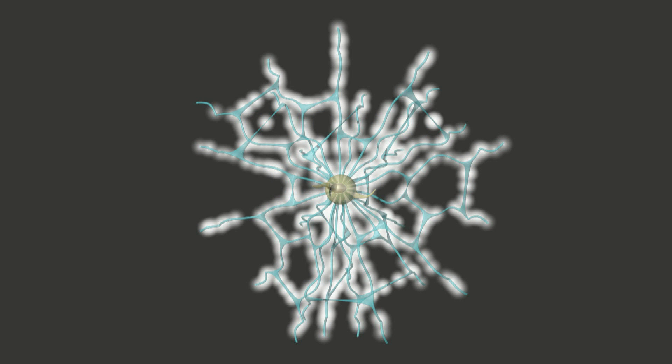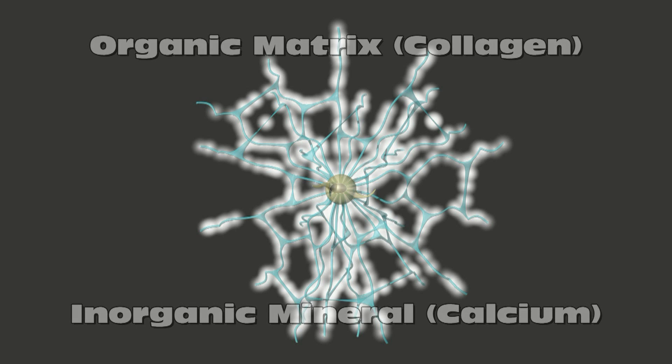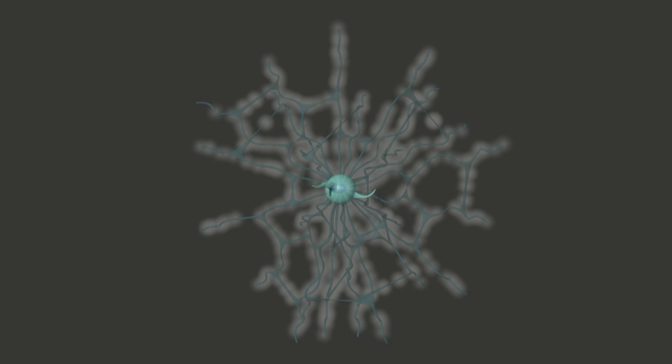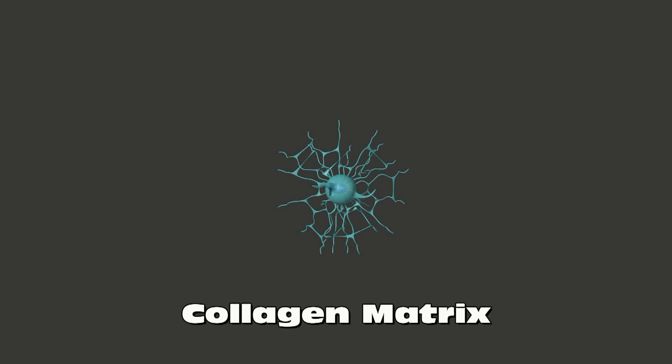Bone tissue is made up of a soft, flexible framework or matrix of organic material, mostly collagen, plastered with a hard, brittle bone mineral, mostly calcium hydroxyapatite and calcium phosphate. Without the organic matrix the bone would be brittle; without the mineral the bone would be too soft to hold its shape. The collagen matrix is produced by cells lining the surface of the bone known as osteoblasts, and calcium and other minerals are deposited to this framework.